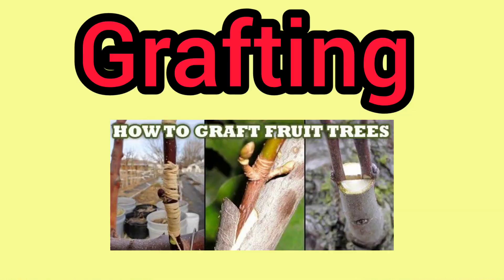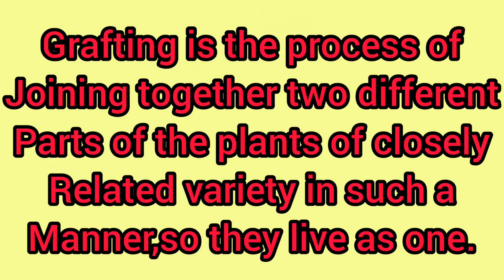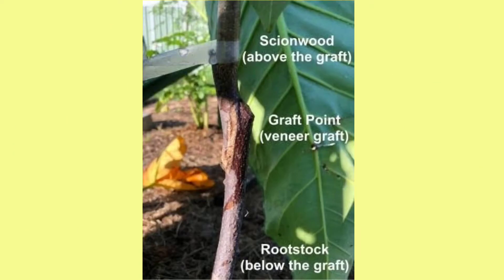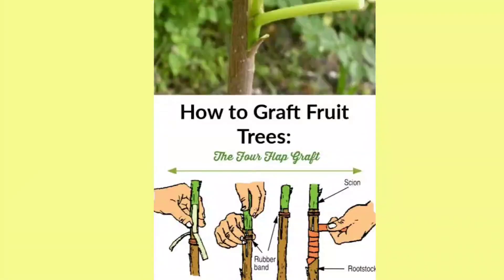What is grafting? Grafting is the process of joining together parts of two different plants of closely related varieties in such a manner so that they live as one plant. This is usually practiced in dicotyledonous plants.